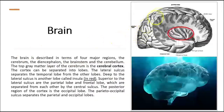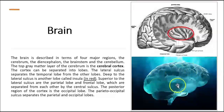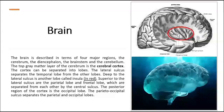The cerebral cortex is divided into two hemispheres, and can also be divided into lobes: the frontal lobe, parietal lobe, occipital lobe, temporal lobe, and another lobe called the insula. You need to separate the temporal lobe and the frontal lobe in order to see the insula inside. The cerebral cortex is not flat — it has elevations called gyri and grooves called sulci.